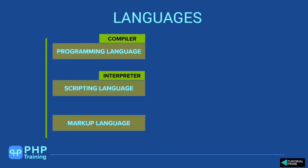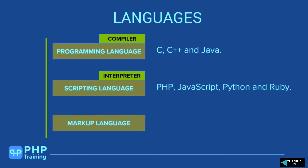We have looked at different languages — programming language, scripting language, and markup language. Programming languages use a compiler, like C, C++, and Java. Scripting languages use an interpreter, like PHP, JavaScript, Python, and Ruby. So what is the real difference between compiler and interpreter? Let's understand this.